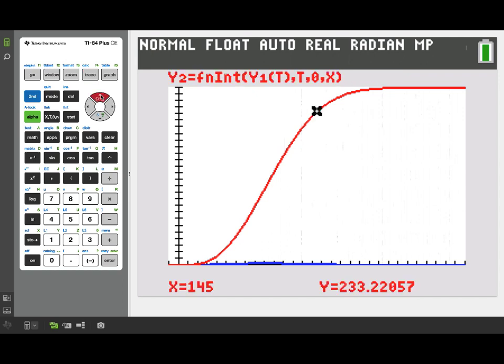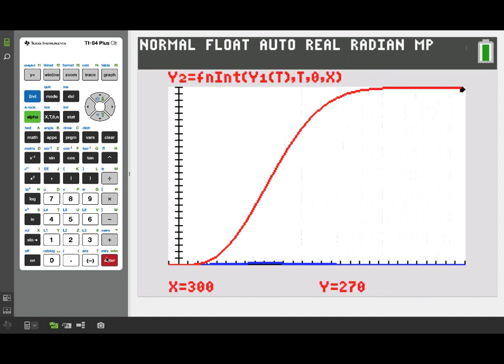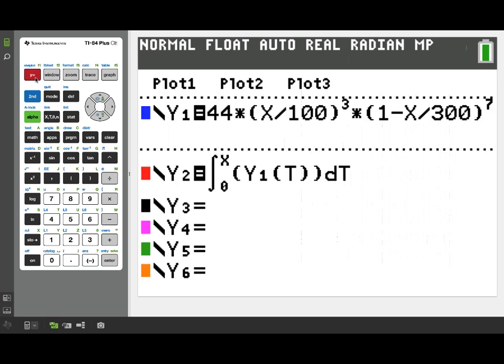Now I've turned on the trace and keep in mind again that this is the running total of how many people have entered the line up to that time. So we can trace along and investigate any of these values or we can jump all the way to the end of the time interval and again we see that value we saw before of 270. And that makes sense because the value of this function at 300 is exactly that definite integral from zero to 300 that we calculated before.